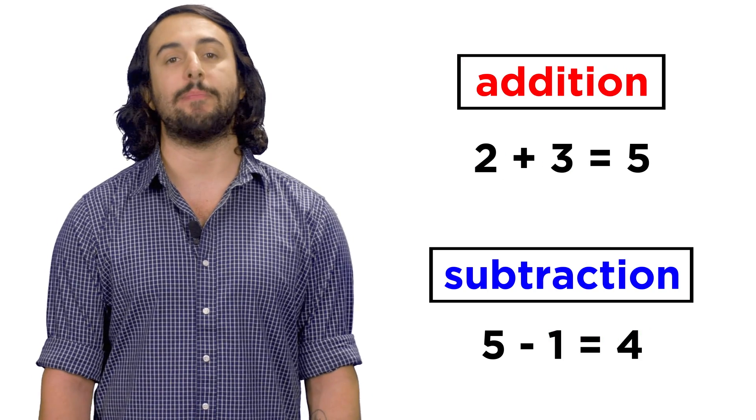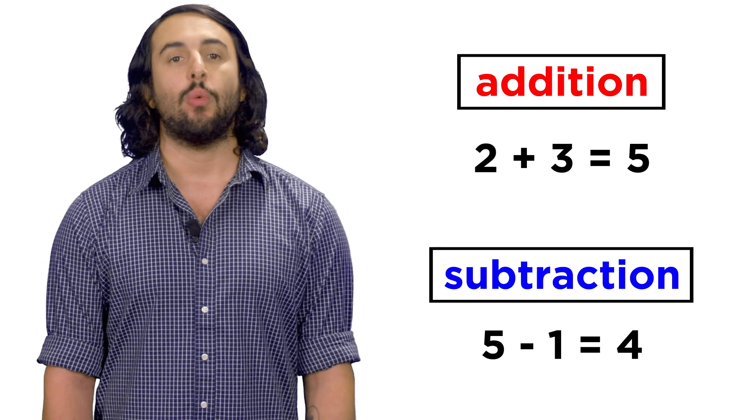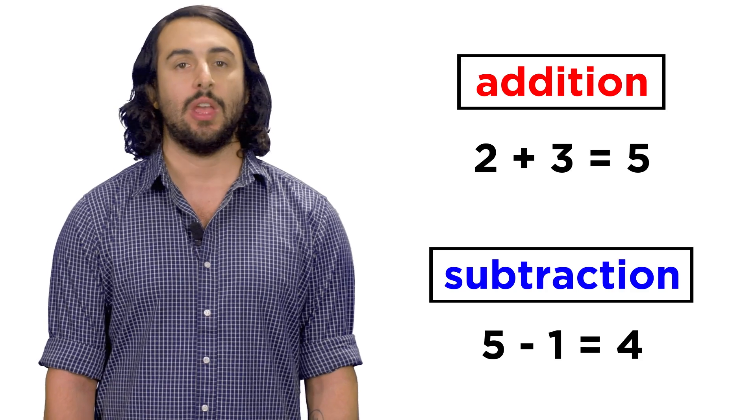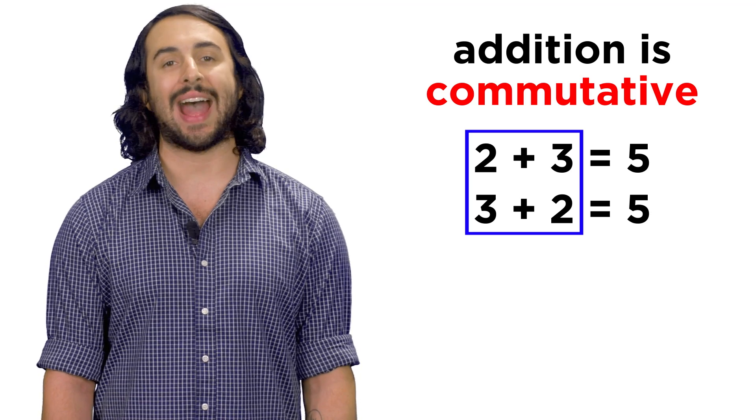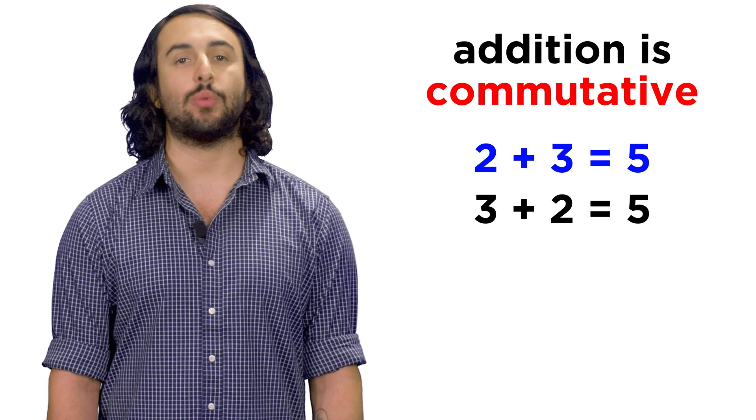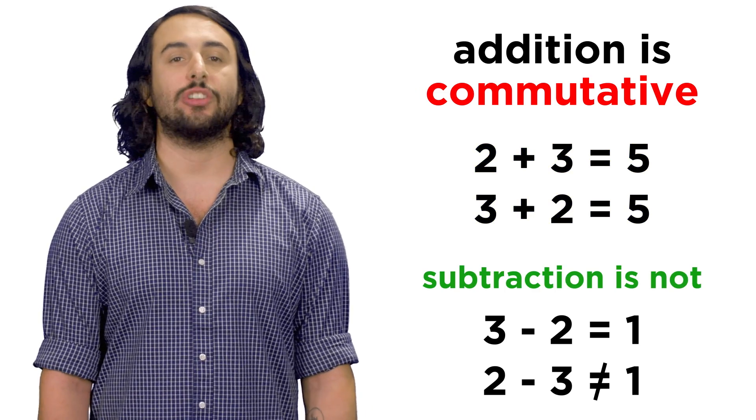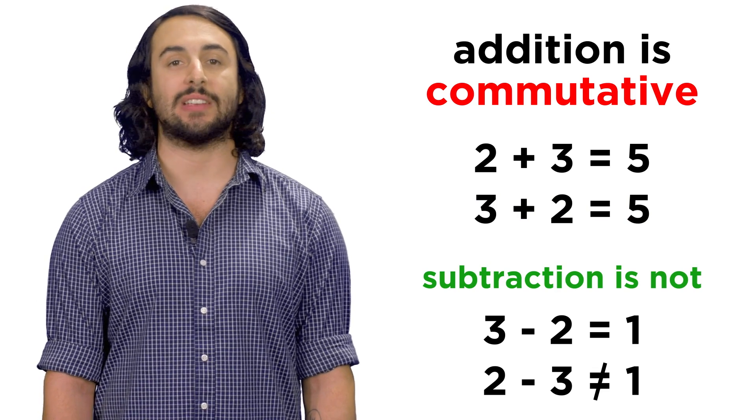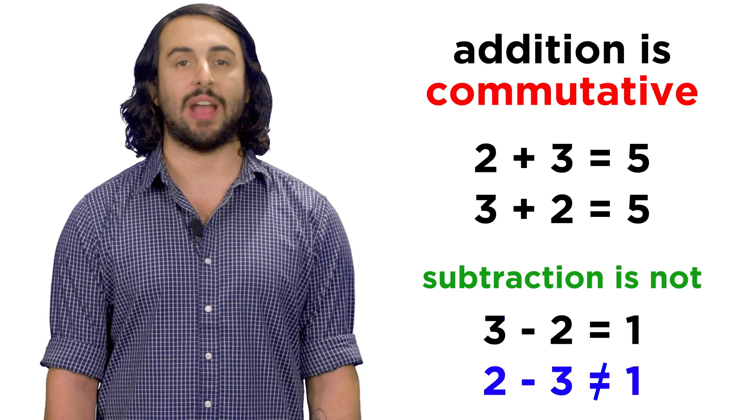Now that we have become familiar with the symbolic representation of these simple operations, we should discuss some applicable properties of numbers. Addition is commutative, in that the order in which numbers are added does not matter. Two plus three equals five, and three plus two also equals five. Subtraction is not commutative. It does indeed matter which number is being subtracted from the other. Three minus two is not the same as two minus three.